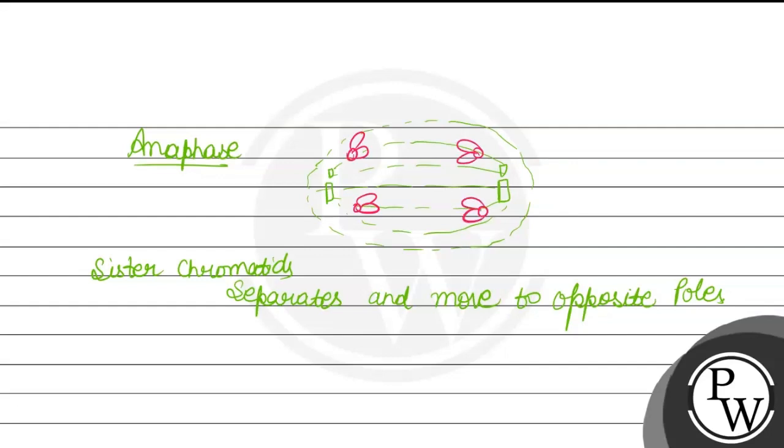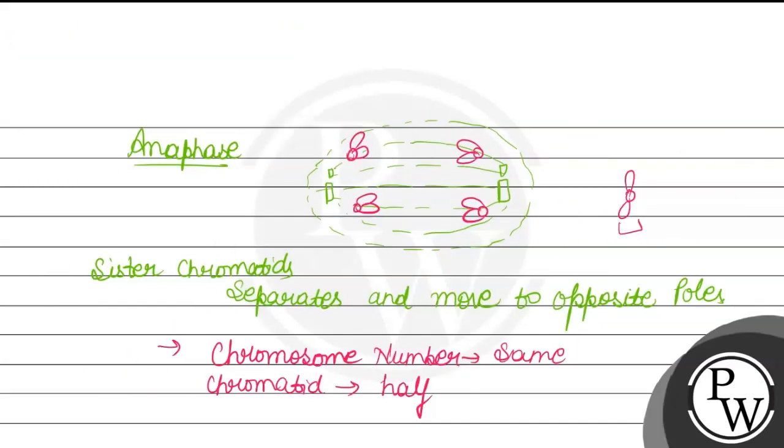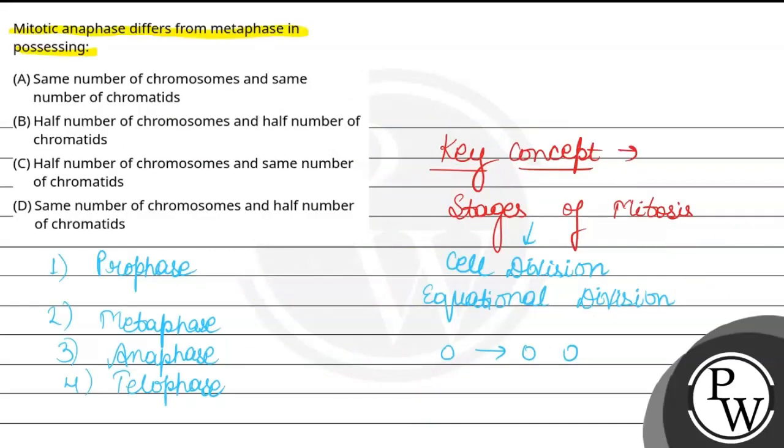Now this chromosome is considered. What happens in anaphase stage? Chromosome number is the same, but the chromatid number becomes half. How many? One chromatid. In mitotic metaphase there are two chromatids, but in mitotic anaphase only one chromatid is there. Chromosome number is the same, only chromatids are half.